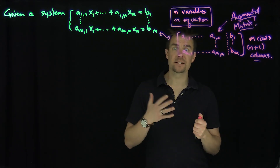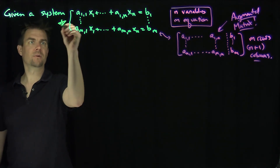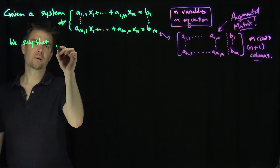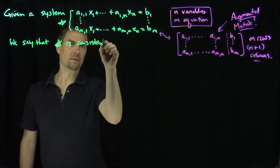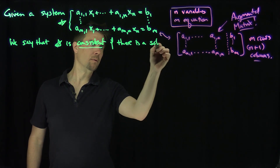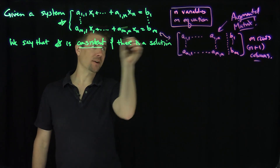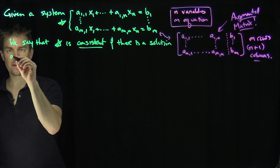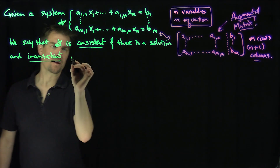The question is: we want to figure out if this system is consistent or inconsistent. We say the system is consistent if there is a solution — if you can find values s1 through sn that satisfy all m equations simultaneously. And inconsistent if there's no solution.